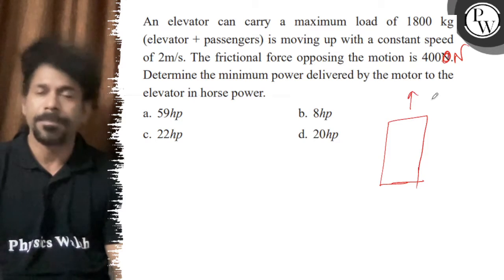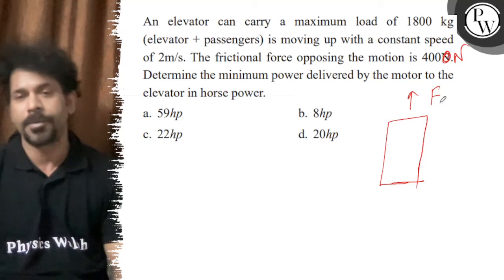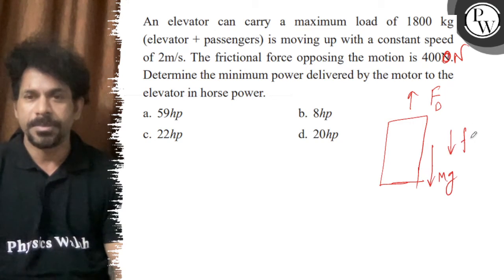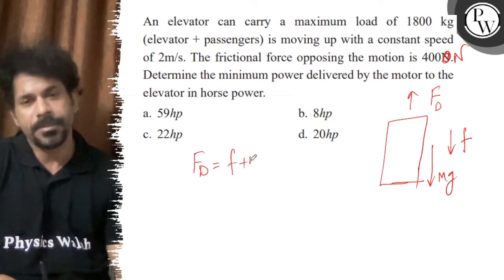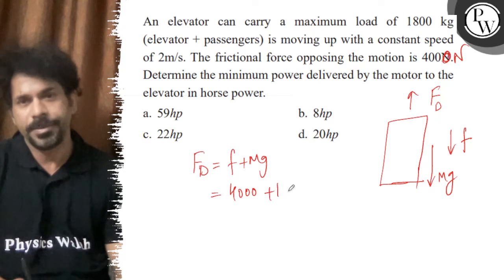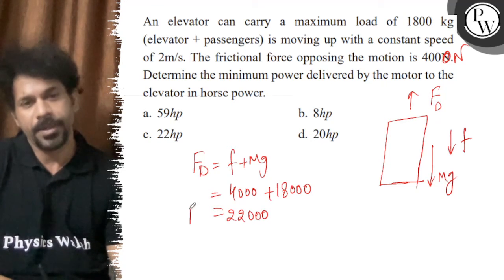The elevator is going up with constant velocity, so the driving power — the driving force — will equal mg plus friction acting downward. So basically, driving force equals friction plus mg. Friction is 4000 and mg is 18000, so driving force equals 22000 newton.